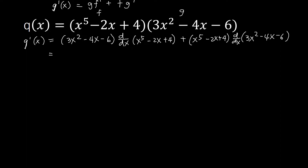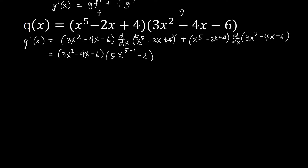So simplifying, this is now 3x squared minus 4x minus 6. Getting the derivative of each of the terms: bring down 5, copy 5, and then we have x to the power of 5 minus 1. Then we have minus 2 — this is x with power 1 minus 1, that's 0, so x to the power of 0 is 1, giving minus 2. And this constant term is 0. So plus, copy x to the power of 5 minus 2x plus 4.